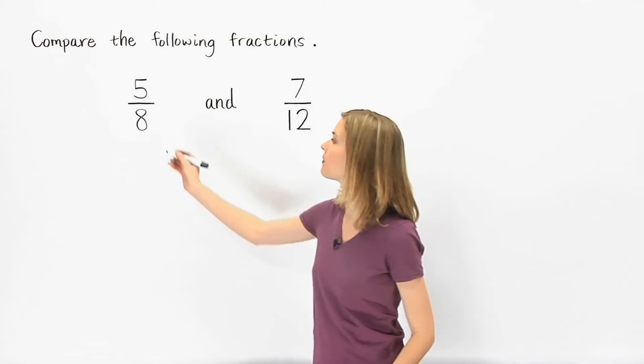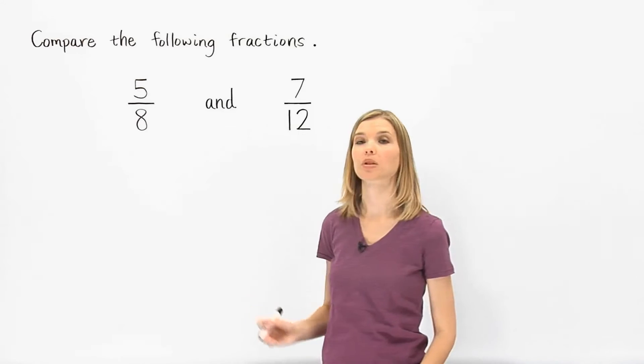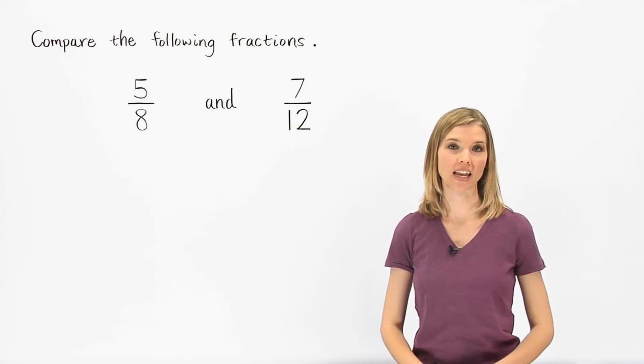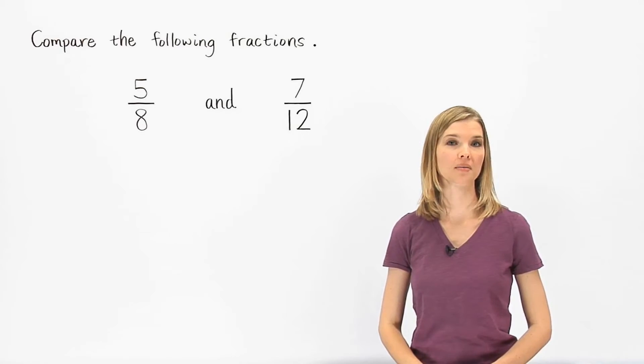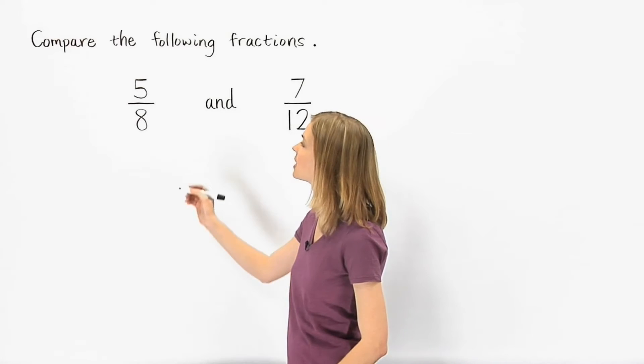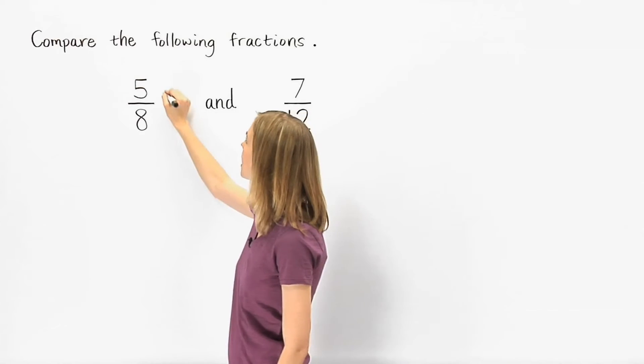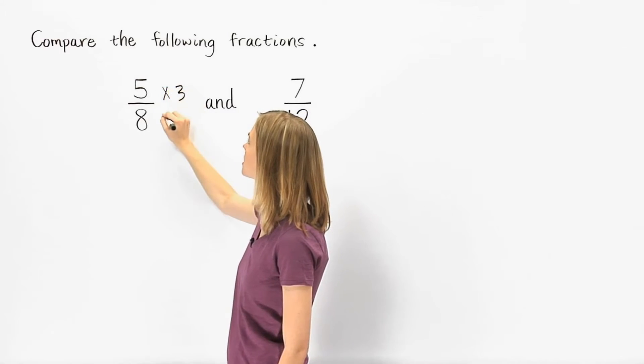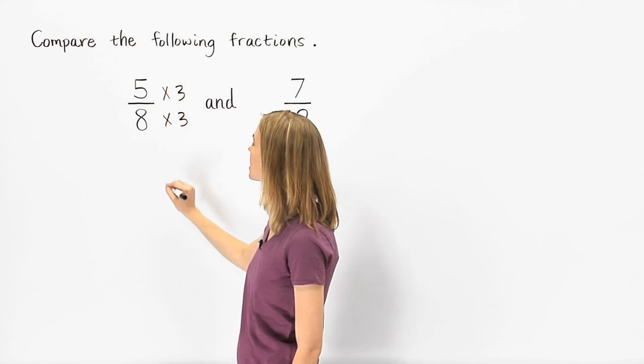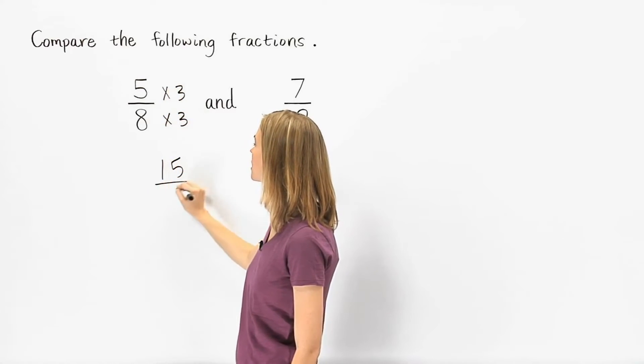The common denominator of 8 and 12 is simply the least common multiple of 8 and 12, which is 24. To get a 24 in the denominator of the first fraction, we multiply the numerator and denominator by 3, to get 15 over 24.